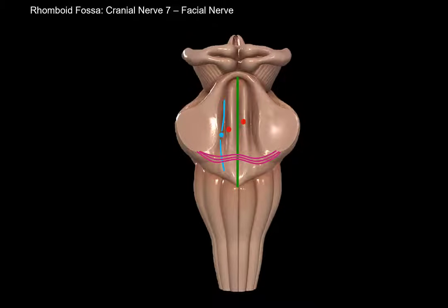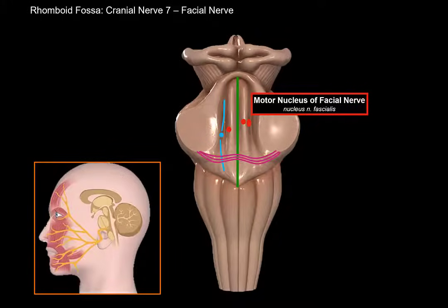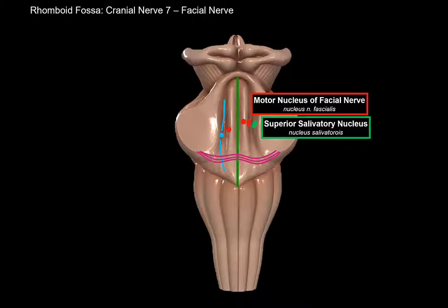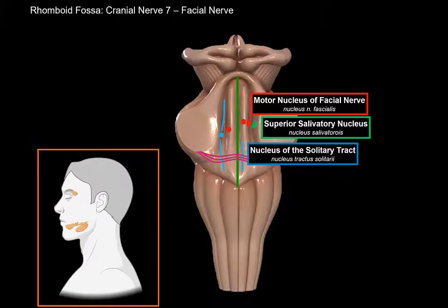Next is the facial nerve, which consists of two roots. One motor root innervates the facial muscles, and an intermediate nerve that carries parasympathetic and sensory fibers. The motor root comes from the motor nucleus of the facial nerve, sending fibers to innervate all the facial muscles of expression as well as some superficial neck muscles. The parasympathetic fibers come from the superior salivatory nucleus, providing parasympathetic innervation to glands in the facial region such as the lacrimal gland, and the submandibular and sublingual glands. The sensory fibers of the intermediate nerve synapse with the nucleus of the solitary tract, which receives information about taste.